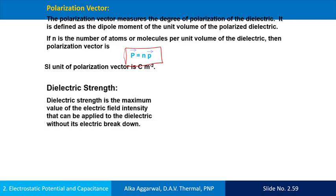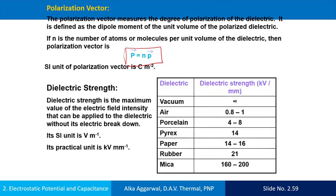Dielectric strength is the maximum value of the electric field intensity that can be applied to the dielectric without its electric breakdown. Its unit is volt per meter, and its practical unit is kilovolt per millimeter. This table gives the dielectric strength of some common materials: vacuum has infinite dielectric strength; air 0.8 to 1; persiline 4 to 8; Pyrex 14; paper 14 to 16; rubber 21; mica 162 to 200.